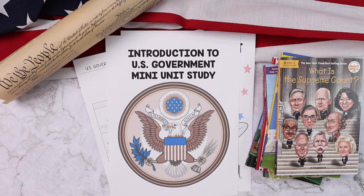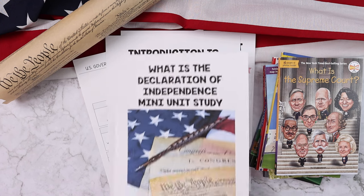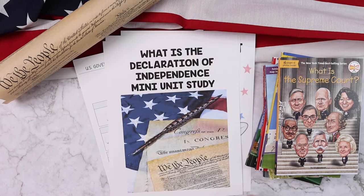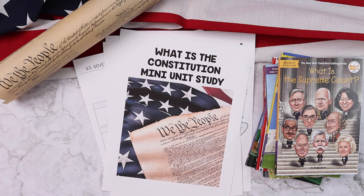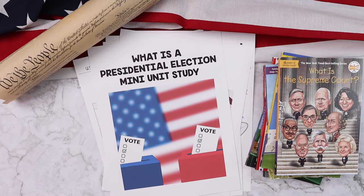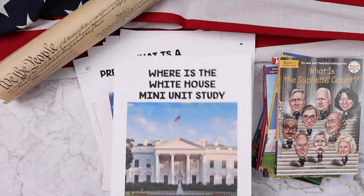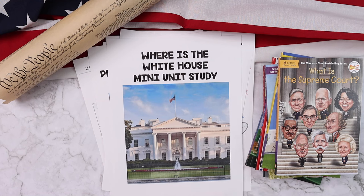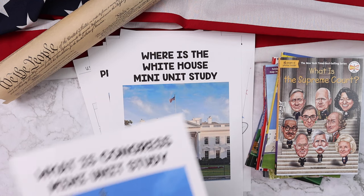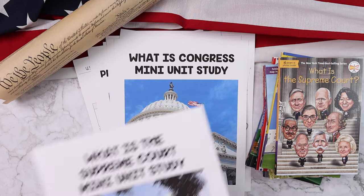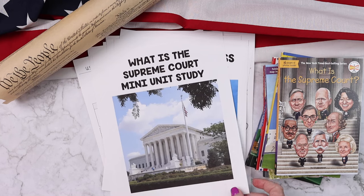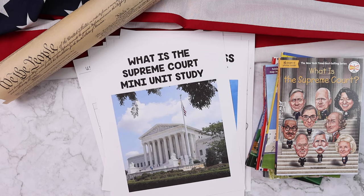And then you will get the mini unit for the Declaration of Independence, What is the Constitution?, What is a Presidential Election?, Where is the White House?, What is Congress?, and What is the Supreme Court?